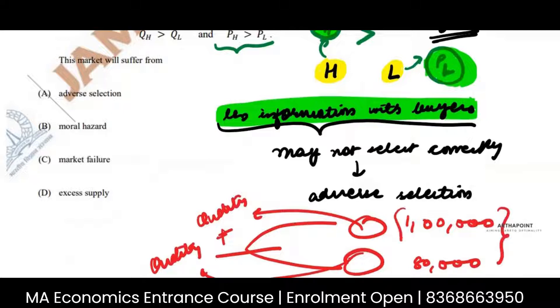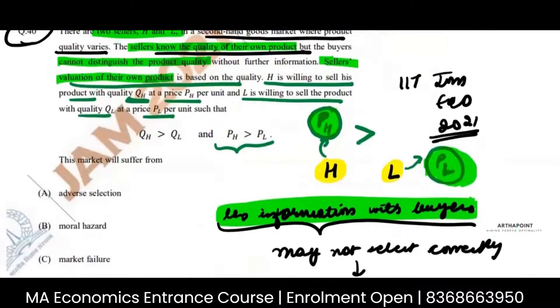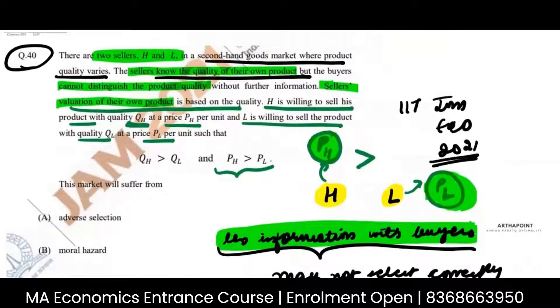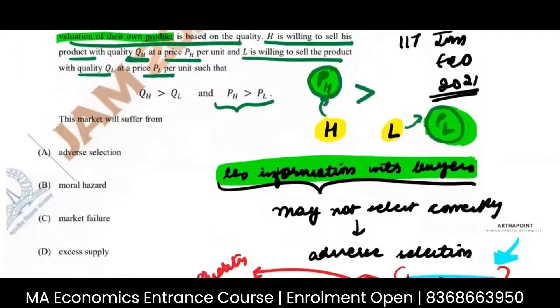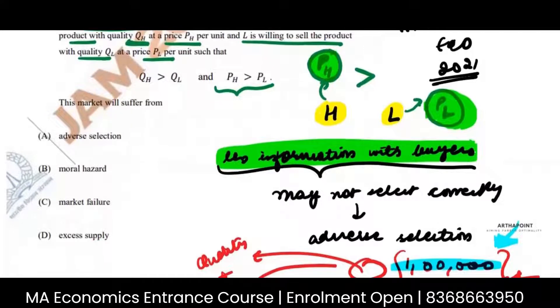I cannot judge the quality without extra information. All that these prices can do is maybe give me some information about the quality. That maybe this price is more than this price, so this is a better quality. But that is not enough. I still as a buyer have less information. So this market will always suffer the problem of adverse selection.